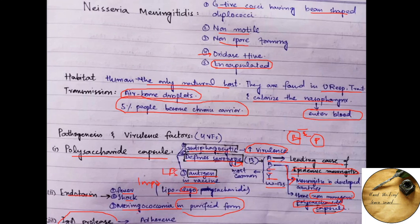Coming towards the third enzyme which is produced by Neisseria meningitidis, it is IgA protease which causes adherence to the mucosa.